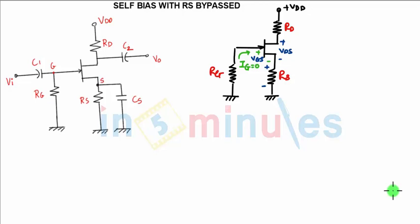Hi, welcome to in 5 minutes. We have seen the basic circuit for self-biased configuration with RS bypass, where the source resistance has a capacitor in parallel with it, meaning we are bypassing the resistance RS.